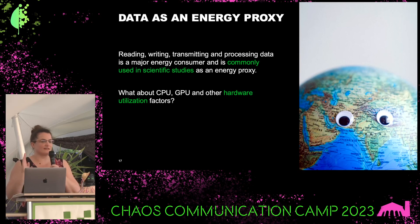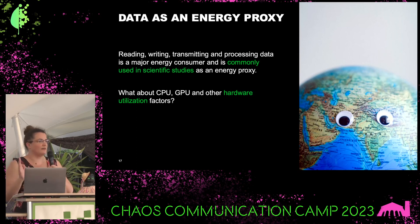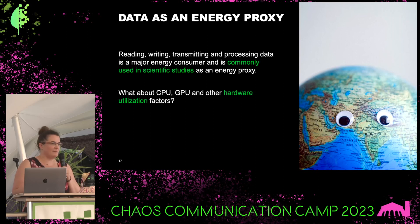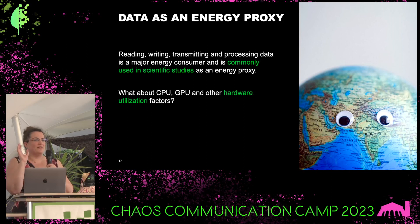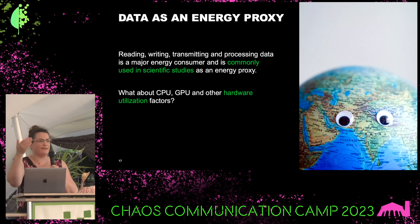Reading, writing, transmitting, processing data is causing a lot of energy consumption. But what about all these other things like CPU, GPU, other hardware utilizations, etc.? Our app was a front-end only app — we didn't do anything in the cloud. So for us, most likely data transmission is really the correct thing to use. But if you think of an app like ChatGPT, where you're just sending a text message and getting a text message back, but in the cloud there is some crazy calculation happening — that's not data being transmitted that is causing the energy consumption, but it's all the calculation done by the AI in the cloud. So for these cases, using data as an energy proxy probably isn't a good idea.